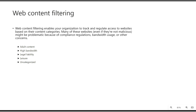Web content filtering helps you track or regulate access to websites based on content categories. Many websites which may not be malicious can still be problematic due to compliance regulations, bandwidth usage, or other concerns. For example, if your users are using VDIs for day-to-day work, they may access games websites or high-bandwidth sites like Netflix, which can choke your bandwidth and ultimately lead to an incident.